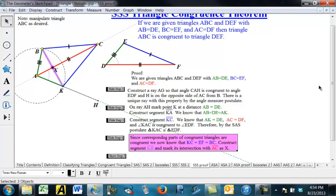Now, corresponding parts of congruent triangles are congruent. So that means that these sides here, the blue sides, are also congruent. So KC is congruent to EF, which is congruent to BC.